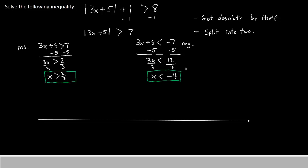Now let's draw the picture on the number line below. We'll place our infinities first — negative infinity and positive infinity. Let's also mark down where 0 is, along with the 2 thirds, which should be slightly to the right of it, and the negative 4, which should be somewhere off to the left. Because this is greater than without the equal to sign, both circles will be open.